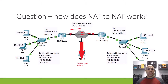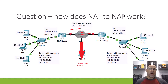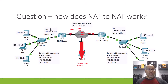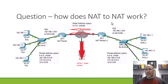Before we get to STUN and TURN, let me ask you this question. All I did was copy the previous topology to the other side of the diagram. We've got a NAT router right here, and we have this private address space on the inside of the NAT router, and we've got this other private address space on the inside of this NAT router.